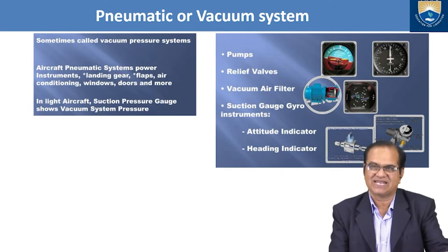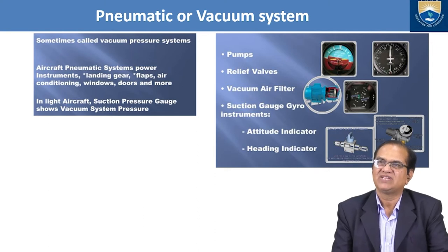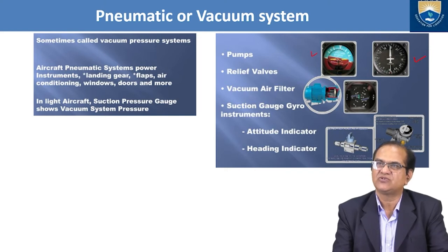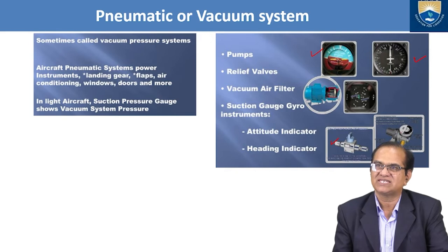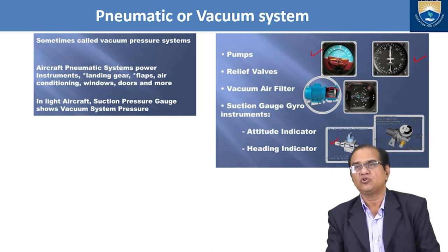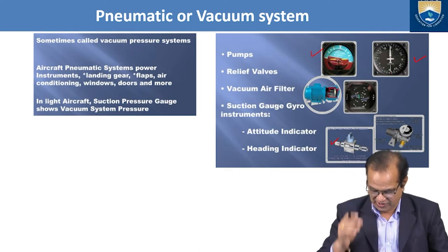These suction pressure gauges work with the help of suction pressure or vacuum pneumatic pressure. Here we have pumps, relief valves, vacuum air filters, suction gauge, gyro instruments, altimeter, attitude indicator, and heading indicator. This is the heading indicator and this is the attitude indicator. The system should have one pump and one relief valve. Here we have the vacuum air filters.